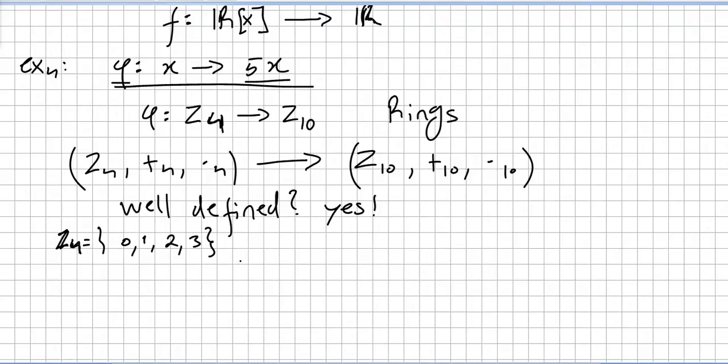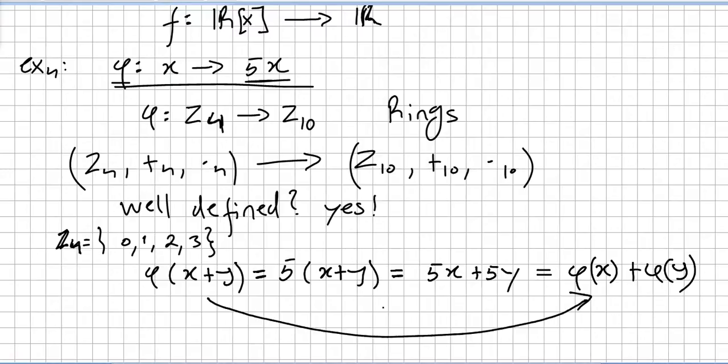Well, now that we saw that this is well defined, the rest is really a matter of some quick calculations. Let us take two elements, phi of (x plus y). So this will be 5(x plus y), which is 5x plus 5y. And this clearly is phi(x) plus phi(y). So there is no problem with addition.